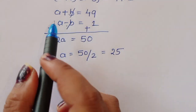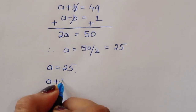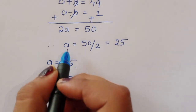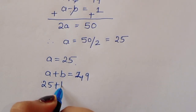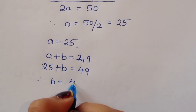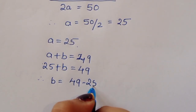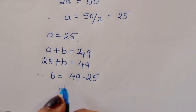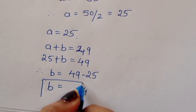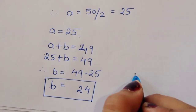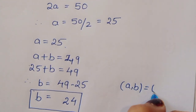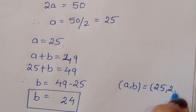To find b in Case 1, substitute a = 25 into a + b = 49: 25 + b = 49, so b = 24. Therefore in Case 1, a = 25 and b = 24.